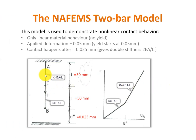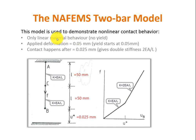This is my model. It consists of two beams with a length of 50 mm, which are joined together rigidly in the middle. There is a gap distance between the lower end B and the rigid ground of 0.025 mm. When this beam is extended, contact will occur and the stiffness will change. I assume linear material behavior — no plasticity — and I apply a deformation of 0.05 mm in the middle, so contact happens after 0.025 mm, which is half the distance, giving me double the stiffness, since stiffness is the same in both tension and compression.